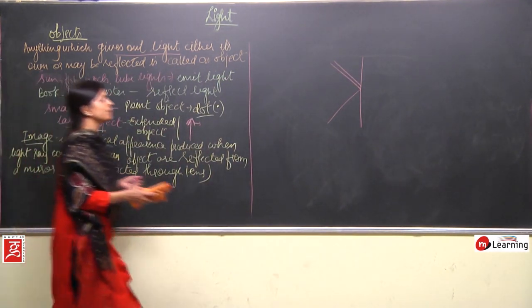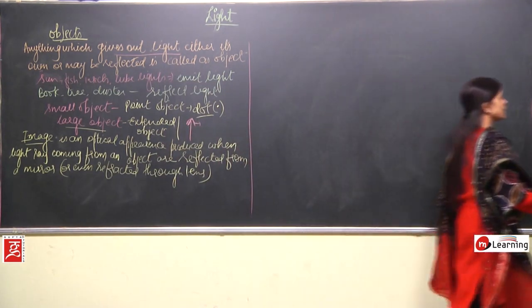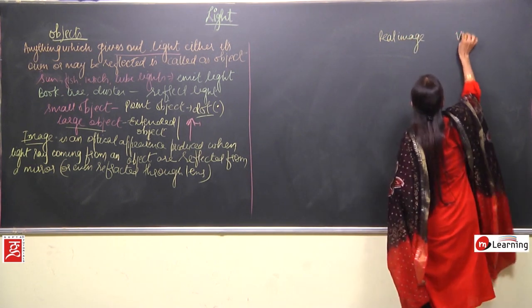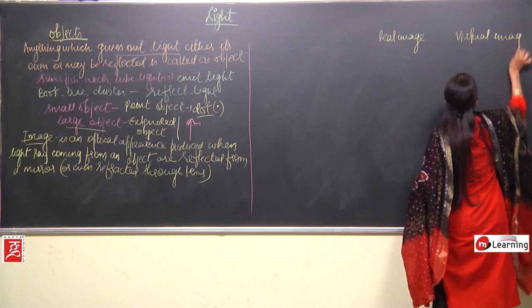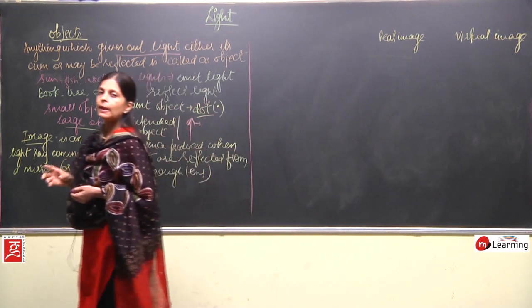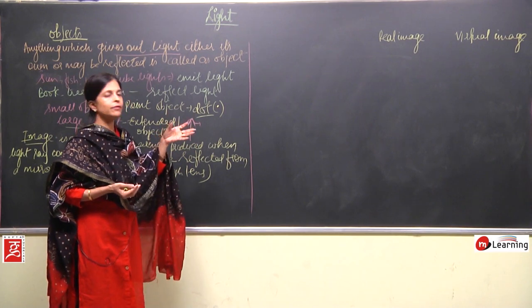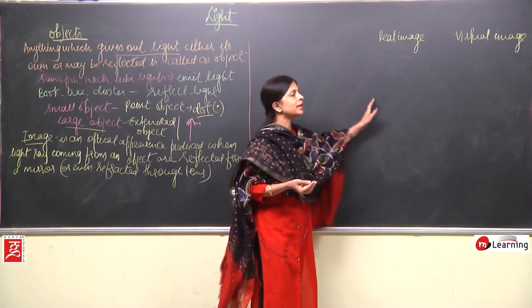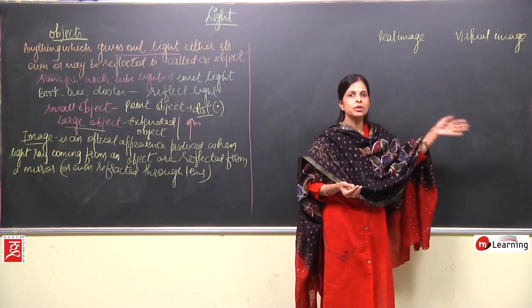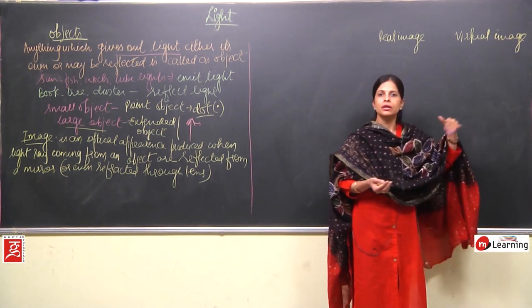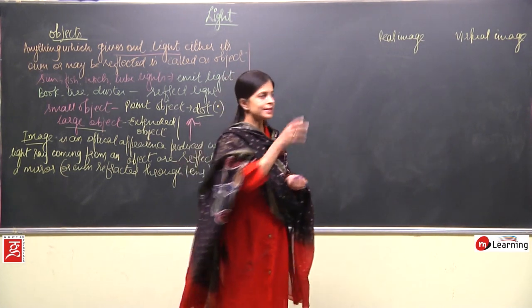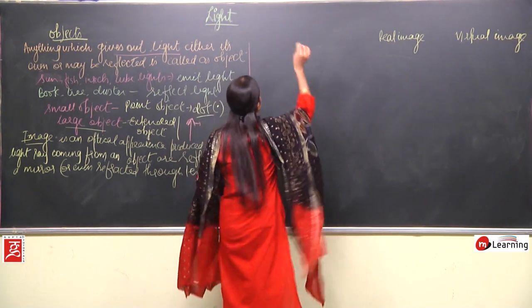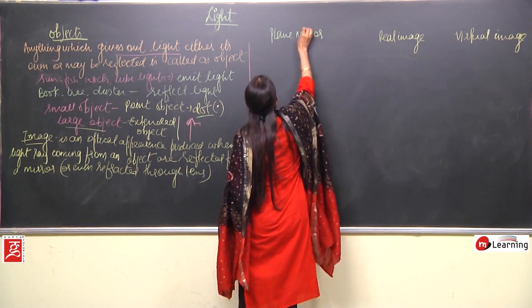Images can be of two different types: real image and virtual image. A real image is one which actually forms; a virtual image is one where the light rays do not actually meet — they just appear to meet. Let me draw a diagram. We will now take a plane mirror.